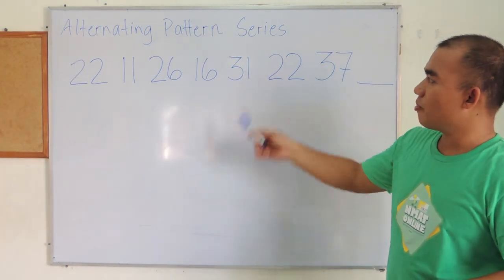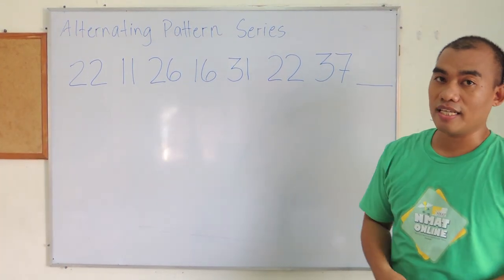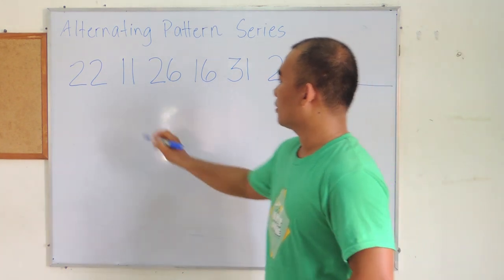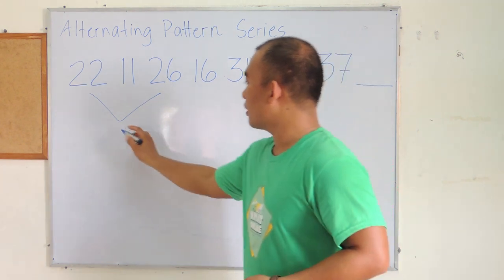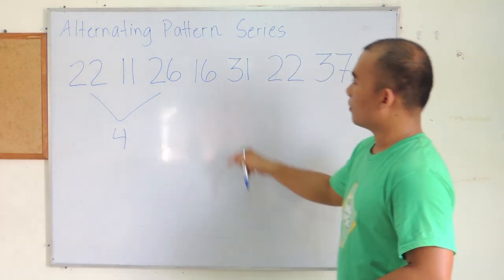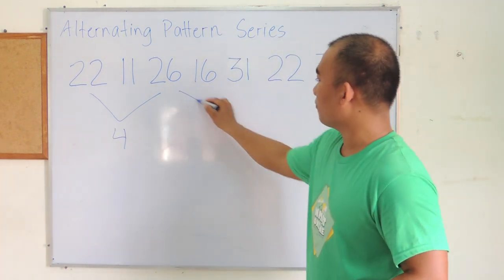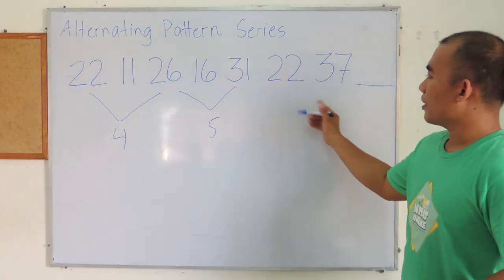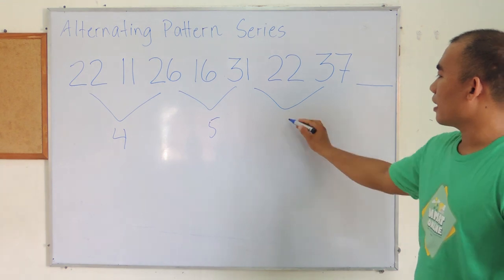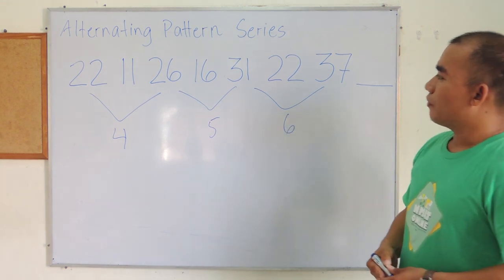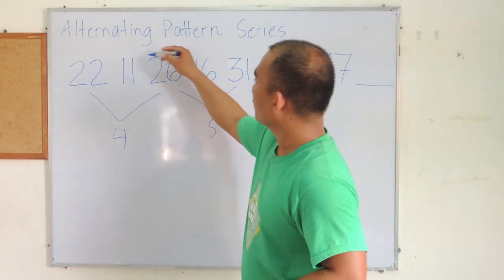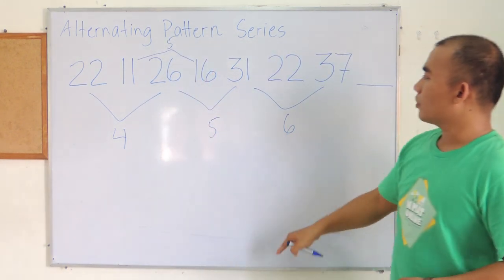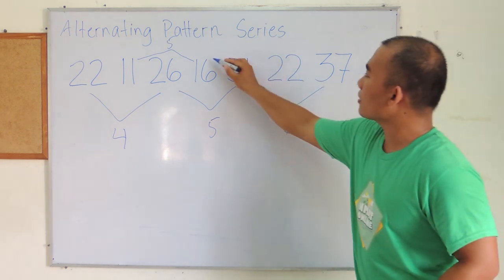Here is another example of an alternating pattern series. For this series, from 20 to 26 the difference is 4; 26 to 31 the difference is 5; 31 to 37 the difference is 6. Then from 11 to 16 we have a difference of 5, and 16 to 22 we have 6.